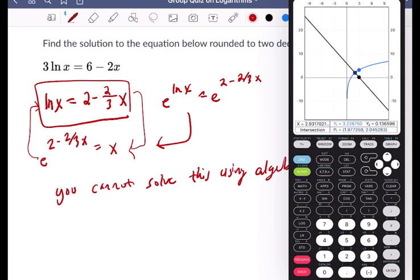And at the bottom of my calculator screen, what you're seeing is the point where they meet. The x value is 1.977. The y value is 2.04. And they want the x value. So if you get about 1.98, that's the nearest hundredth. All right. Hope that helped.